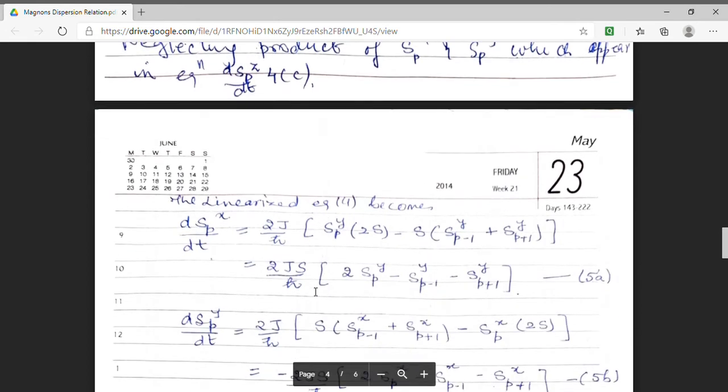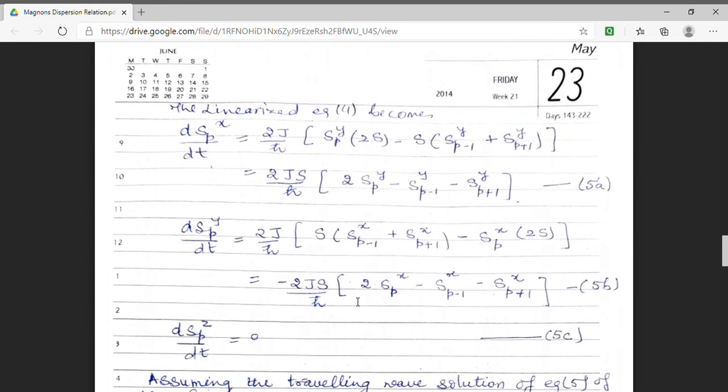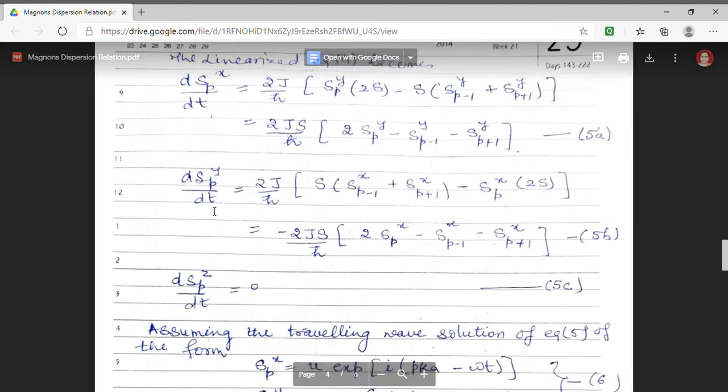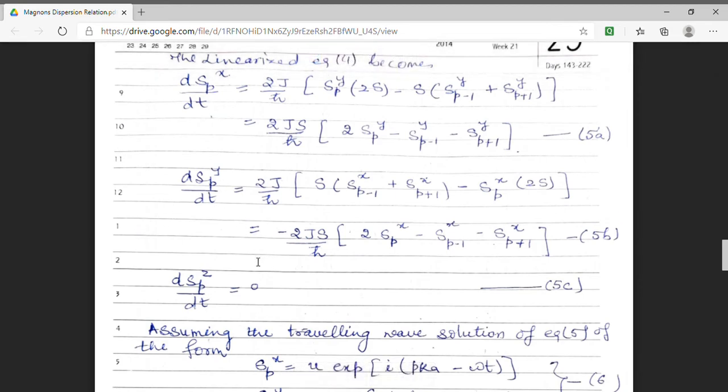d spx upon dt to be equal to 2js upon h cross multiplied by 2spy minus sp minus 1y minus sp plus 1y. Similarly, the expression for dspy upon dt. This is my third expression, d spz upon dt equal to 0.